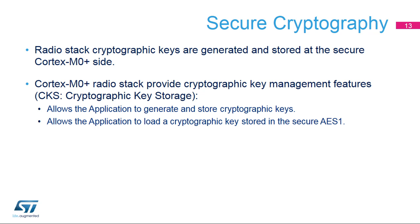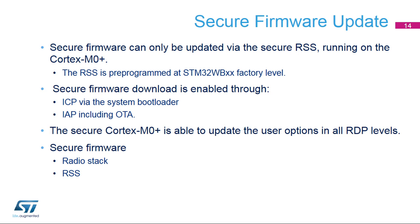The radio stack running on the Cortex-M0 Plus provides cryptographic key management to the application. The cryptographic keys are generated and stored on the secure Cortex-M0 Plus side using the cryptographic key storage, or CKS. The STM32WB includes a pre-programmed RSS, which allows the secure Cortex-M0 Plus software to be updated. Both the radio stack software and the RSS itself can be updated. Secure software can be downloaded via in-circuit programming by the system bootloader or via in-application programming by an application bootloader, including over-the-air, or OTA.